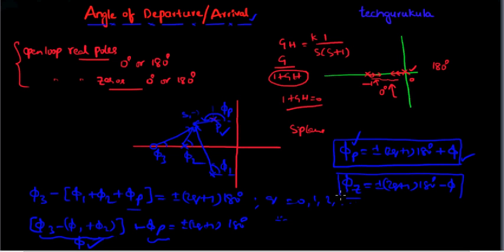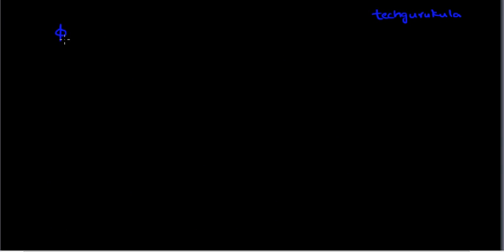These are two important formulas to remember. For poles: phi_P equals plus or minus (2Q plus 1) times 180 degrees plus phi. For zeros: phi_Z equals plus or minus (2Q plus 1) times 180 degrees minus phi. We will get a better sense of these once we solve a problem.